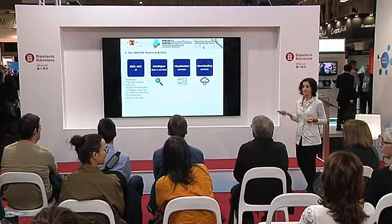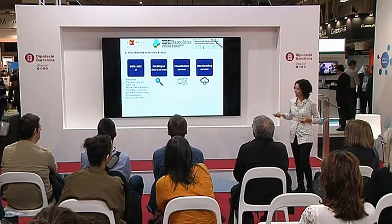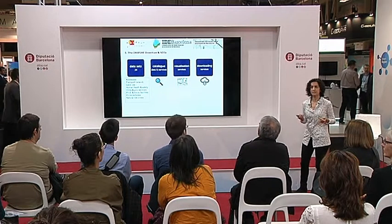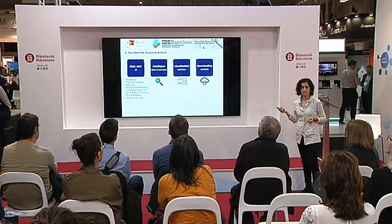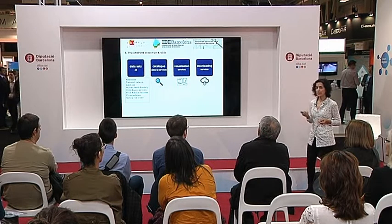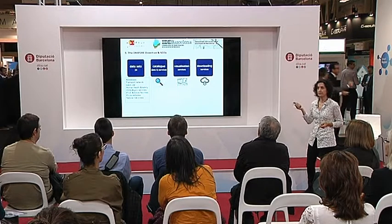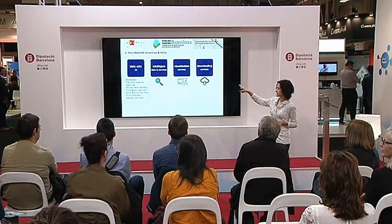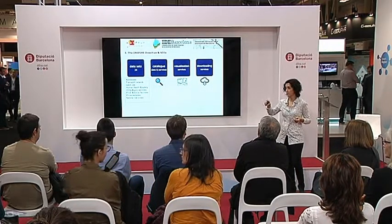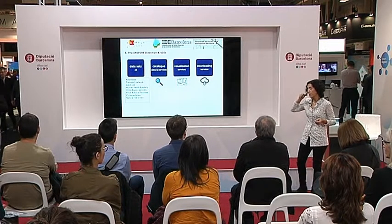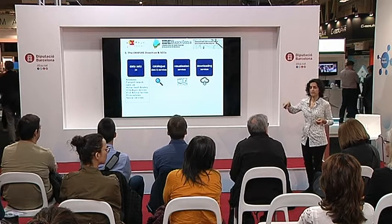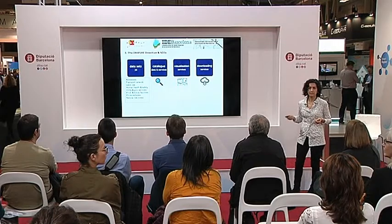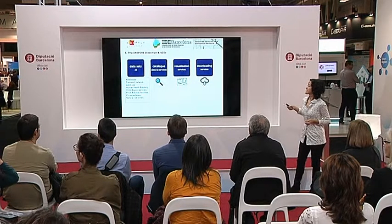What does the INSPIRE Directive define? First, it defines which data sets are affected by the legislation — there are 34 data sets included. Every public administration that produces any of these 34 data sets has to comply with INSPIRE. Some examples are addresses, which is a municipal competence, meaning every municipality in Catalonia and Spain has to comply with INSPIRE regarding addresses. Other examples include transport networks, land use, utilities, services, and protected sites.